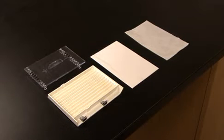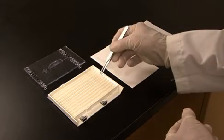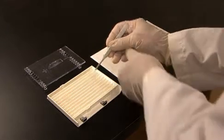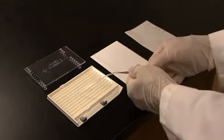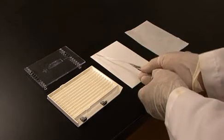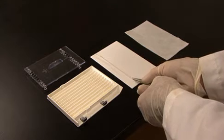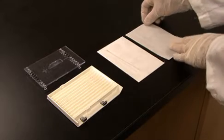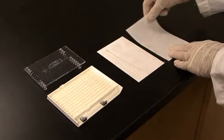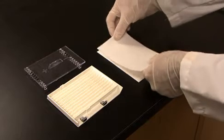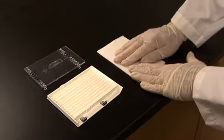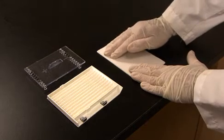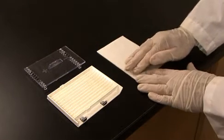Prior to equilibration, I will remove the IPG strip from the focusing tray and blot the excess oil off of the strip. First, pick up one end of the IPG strip, turn it over so the gel side is up, and place the IPG strip gel side up on a dry piece of filter paper. Wet another piece of filter paper and place the wet filter paper onto the IPG strip and gently blot the excess mineral oil off the strip. Be careful not to press too hard to damage the IPG strip gel.